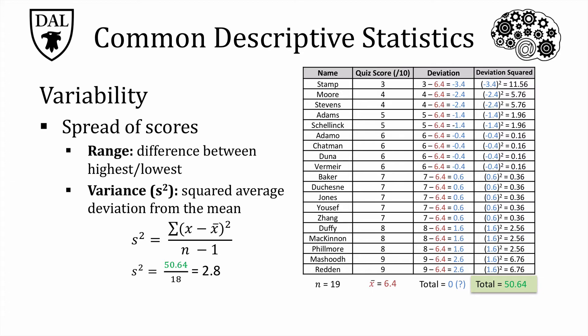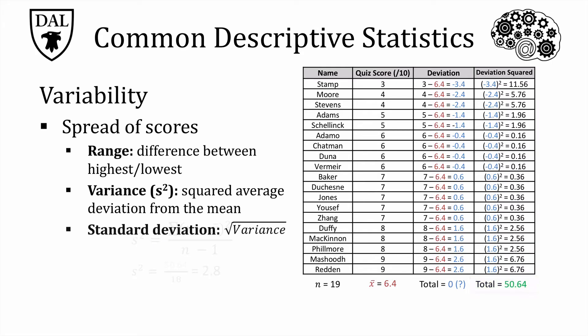Values larger than 2.8 would indicate more spread in the values, and values less than this tell us that scores are more closely clustered together. If you're wondering why it's n minus 1, don't worry about that for our purposes — some clever statistician calculated that n minus 1 is more accurate to predict variability than just dividing by n, as we did for the mean. What you'll see reported more often, however, is the standard deviation, which takes the square root of the variance, giving us roughly 1.7 — in the same form as the scores used to get the mean.